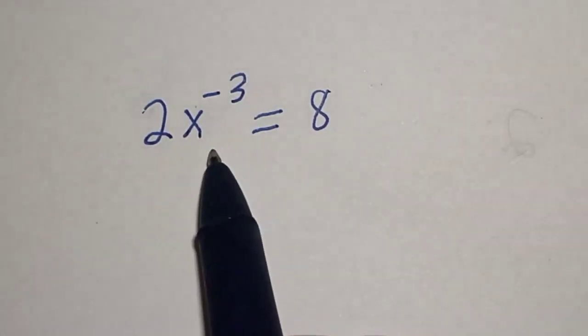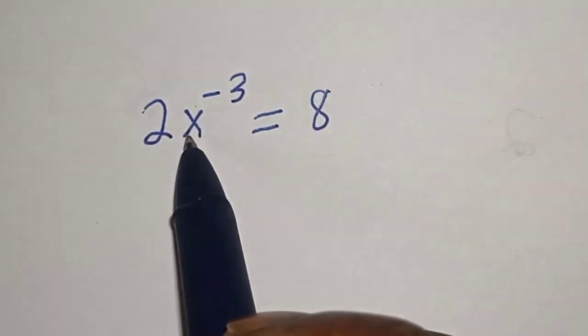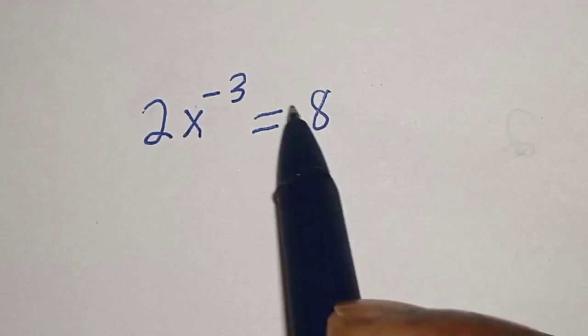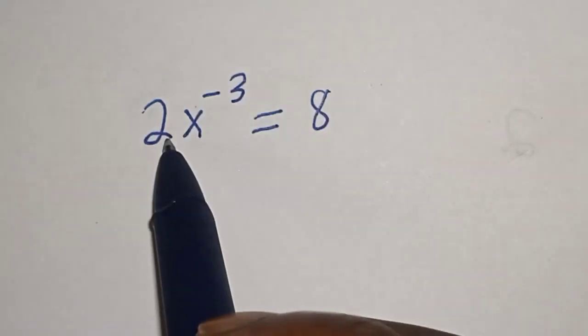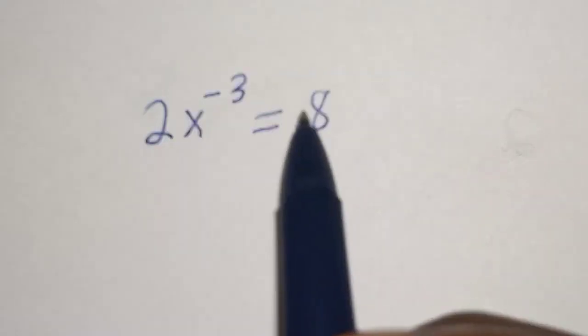Hello, welcome to mages. In this class we want to find the value of s from this exponential equation: 2s raised to power minus 3 is equal to 8.